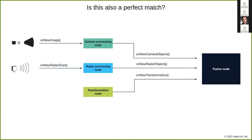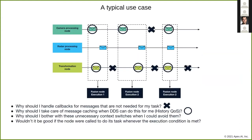You can implement this and have individual callbacks for all these subscriptions. But the question is if this is really a perfect match. Why should I handle all the callbacks for messages that are not really needed for my task? These are the messages marked here with the cross. And why should I take care of the message caching on the user side when DDS could already do this for me? DDS has the history quality of service. Why should I bother with all these unnecessary context switches when I could avoid them? Wouldn't it be better if the node were just executed whenever the execution condition is met?